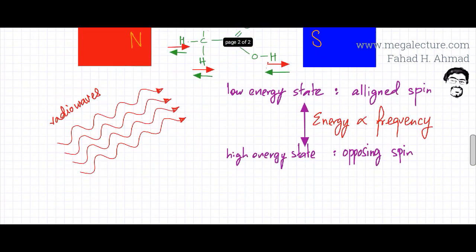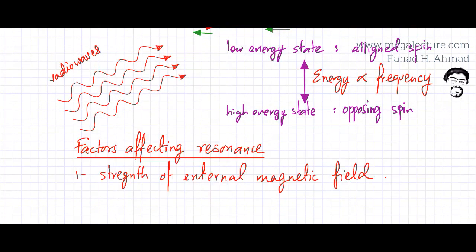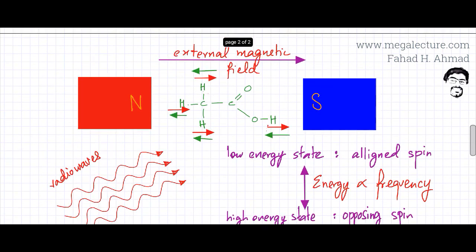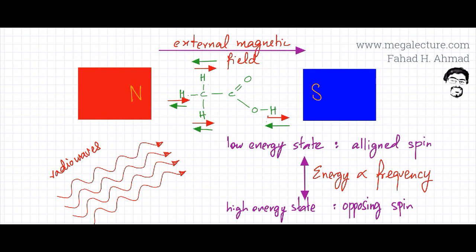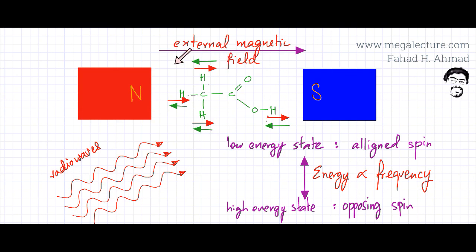Energy is proportional to frequency. So if a proton needs high energy to resonate, it would absorb a higher frequency; if it needs low energy, it absorbs a lower frequency. The first factor affecting resonance is the strength of the external magnetic field. If the external magnetic field is very powerful, the protons would be aligned very strongly with it, making it very difficult for them to go into opposing spin — a lot of energy would be required.